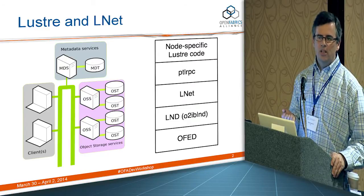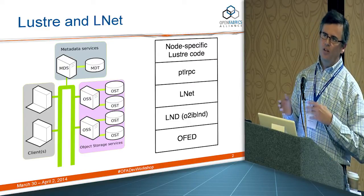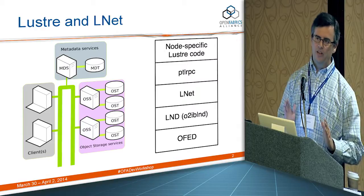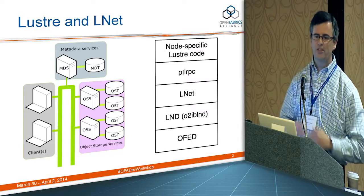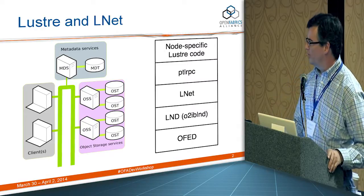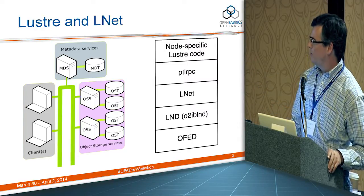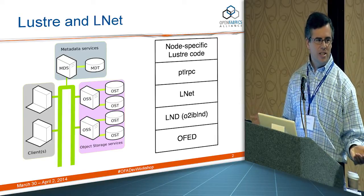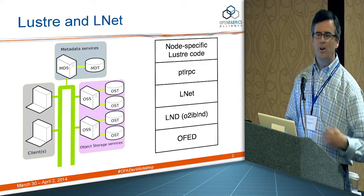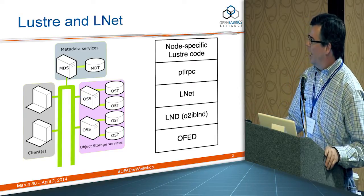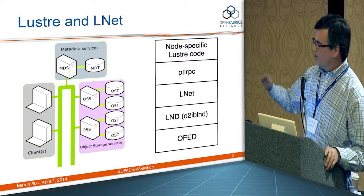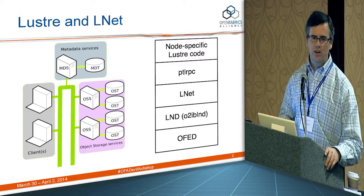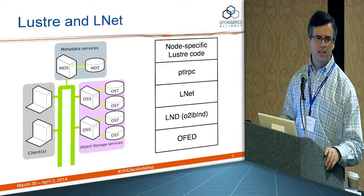All three node types have their own Luster logic, but when it comes to networking they all converge to the same point — the PortalRPC layer. Luster is RPC-based, request-response. The PortalRPC layer does all the RPC processing and passes requests down to the Luster networking layer, or LNET layer.